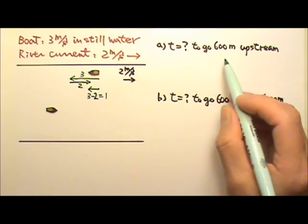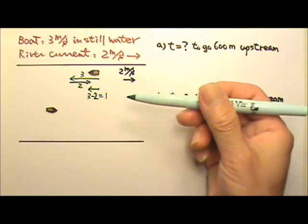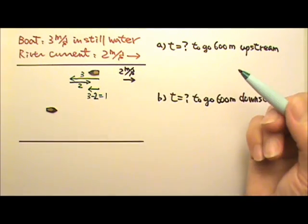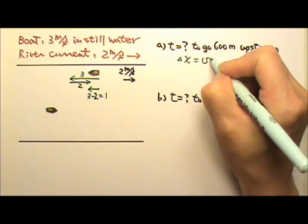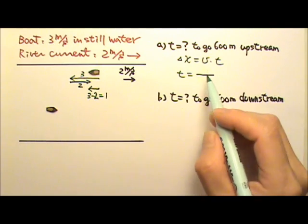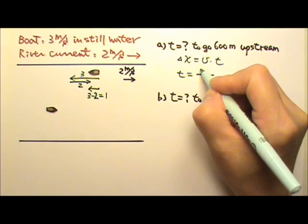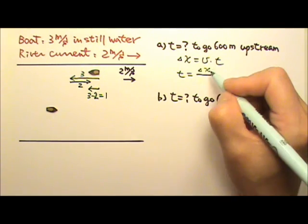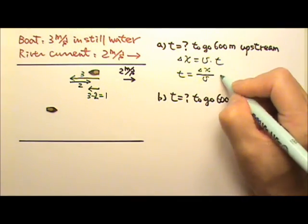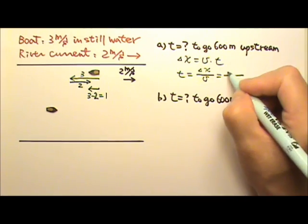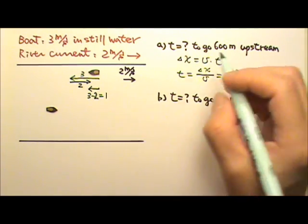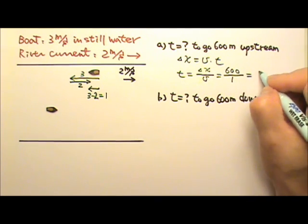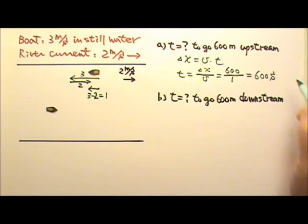How long does it take to go 600 m? It's constant velocity motion, so the only equation we need is delta x equals velocity times time. The time is delta x divided by velocity. Delta x, the displacement, is 600 m, and the velocity is 1 m/s, so it takes 600 seconds.